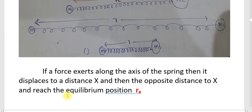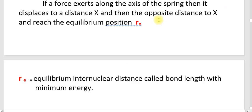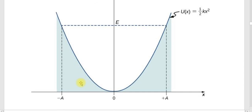Here is the equilibrium position. I am going to extend and compress the system — that means the bond length is getting disturbed. With any increase or decrease in the internuclear distance R, the potential energy of the system increases, and the curve obtained is in parabolic form. Whether the internuclear distance increases or decreases, the potential energy increases.